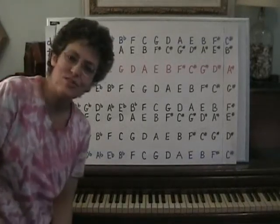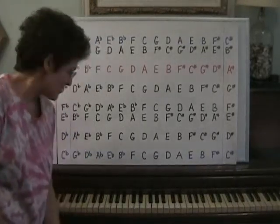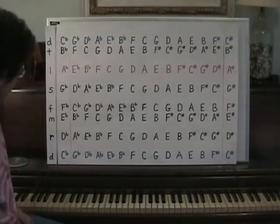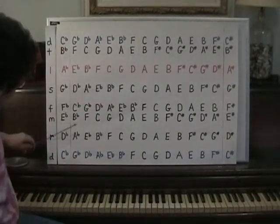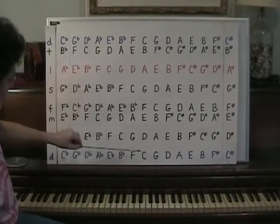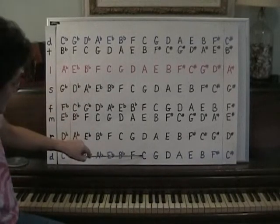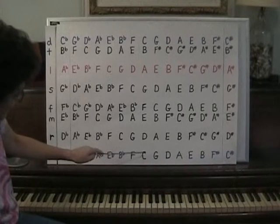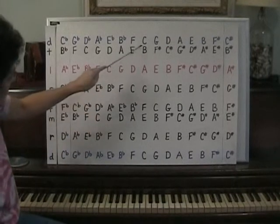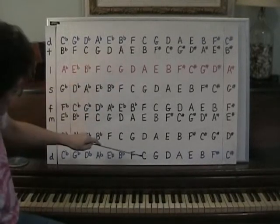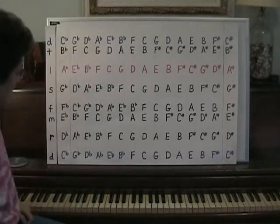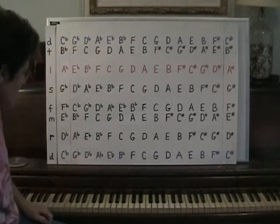Today we're going to sing the circle of fifths. This is the circle of fifths chart that I showed you in the last lesson. If we go up from any note, we go up the scale. So if we were on C, the notes in the key of C would be C, D, E, F, G, A, B, and the C is the octave. That top row is just a repeat of the note.